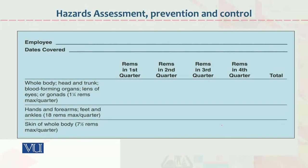This is a diagram showing the conclusion of all these things. It includes: dates covered, rems in the first quarter, rems in the second quarter, rems in the third quarter, rems in the fourth quarter, and a total — forming the cumulative radiation exposure record.